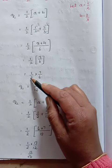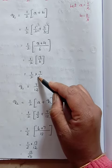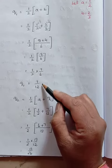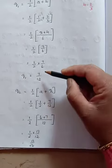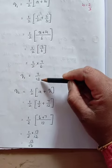1 times 7 is 7, 2 times 6 is 12. Since the cancellation is not possible, we have multiplied directly. So now we got the first rational number, Q1 equals 7/12.